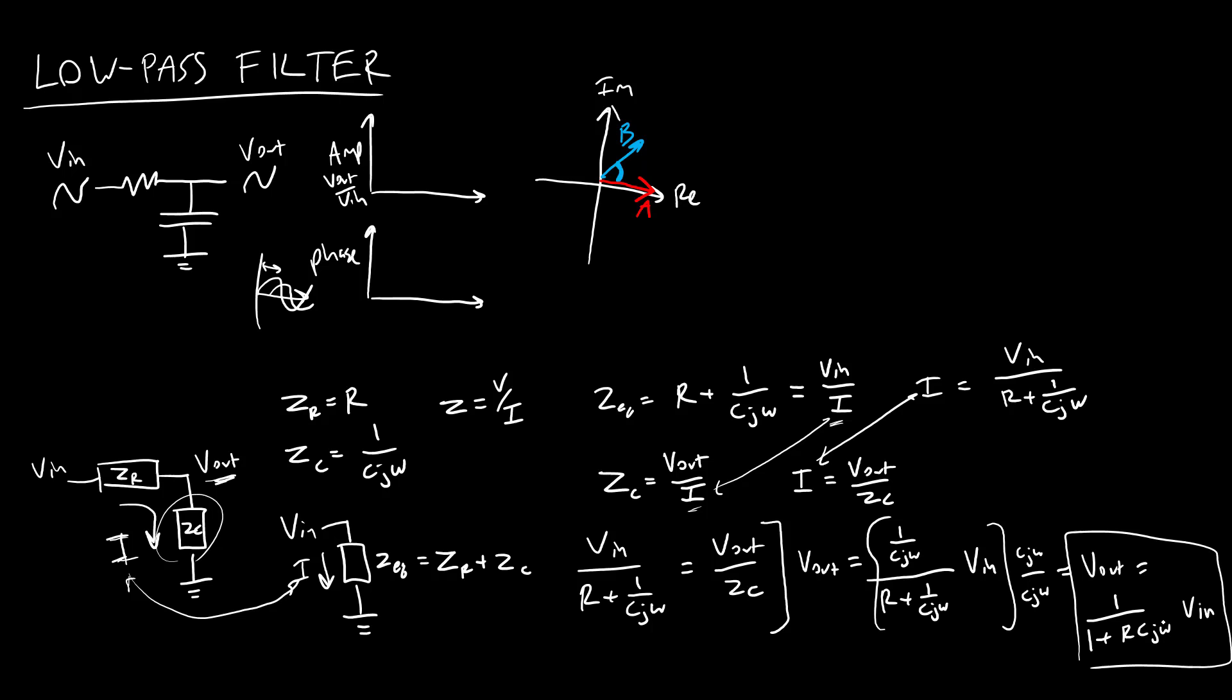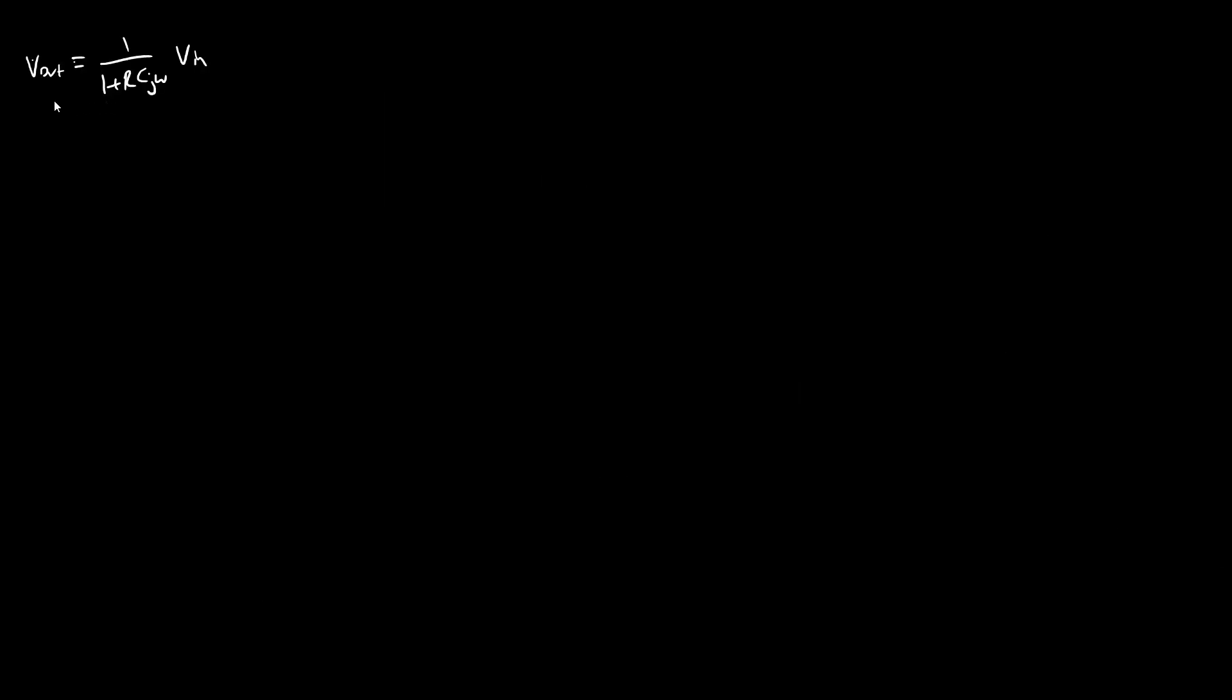Because again, remember, we want this is a complex number, but we want to get this represented both as the amplitude and phase as a function of frequency. Okay, so I've carried over our equation from the previous slide, but we have a complex number in the denominator of a fraction. What exactly does that mean? We're going to insert some complex algebra magic.